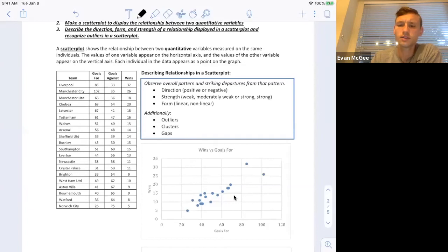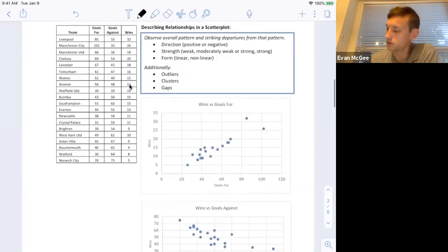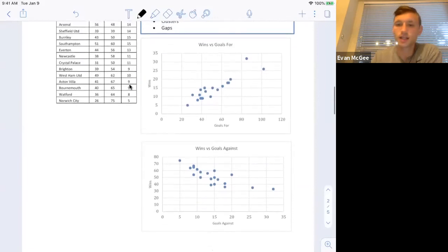So let's look at two different variables. Now I made my explanatory variable goals against and the response wins. So we should see a negative relationship because the more goals a team gives up, the less wins they have. And you can see that's exactly what happens here. The more goals against a team has then the fewer wins they will have.